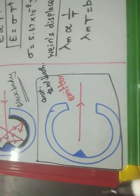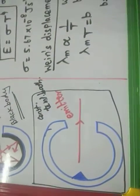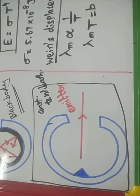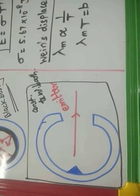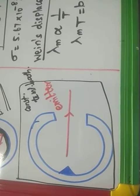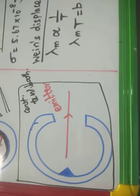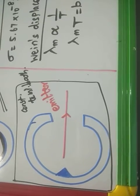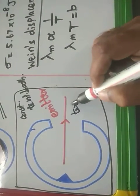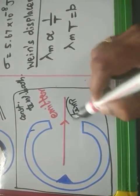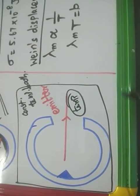A black body will not reflect, it will not transmit — it will absorb all the heat radiation incident on it. When kept in a constant temperature bath, it will emit all the heat radiations. The wavelength range of the emitted radiation is independent of the material of the body, but depends only on the temperature of the black body.